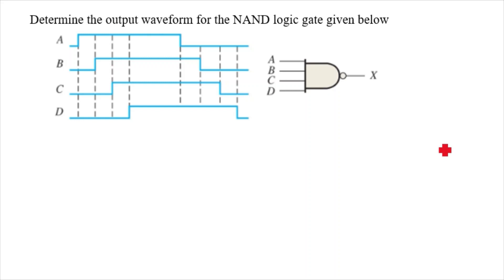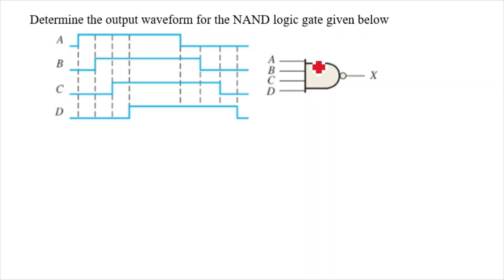Hello friends, today we are going to solve this question. This is a four-input NAND gate and the question is: determine the output waveform for the NAND logic gate given below. The input waveforms A, B, C, D are given to you and you need to find the output X waveform for the NAND gate.